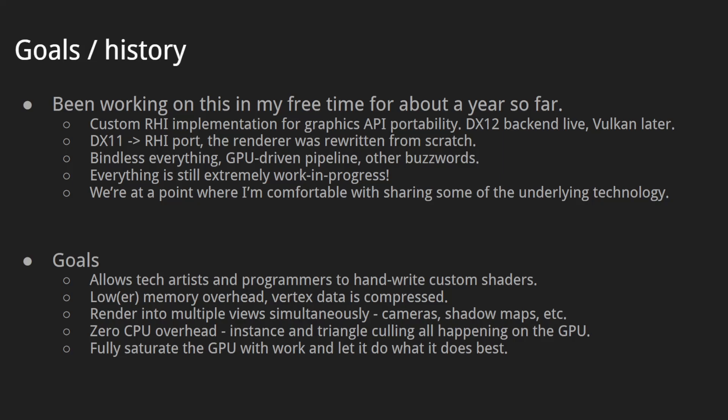The main goals are to allow tech artists and programmers to handwrite custom shaders, to have low memory overhead — our vertex data is compressed and we're generally very careful about allocating memory. We also want to render into multiple views simultaneously, supporting an arbitrary amount of cameras, shadow maps, or any other custom rendering passes. We have zero CPU overhead: instance and triangle culling all happen on the GPU. And last but not least, we aim to fully saturate the GPU with work and let it do what it does best.